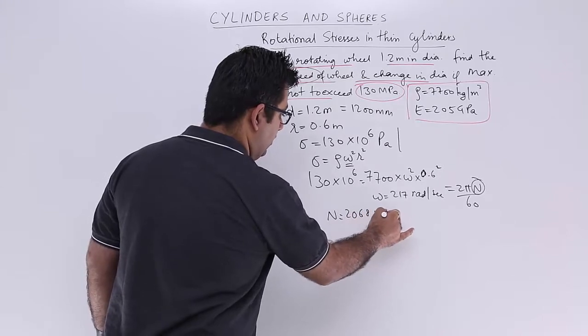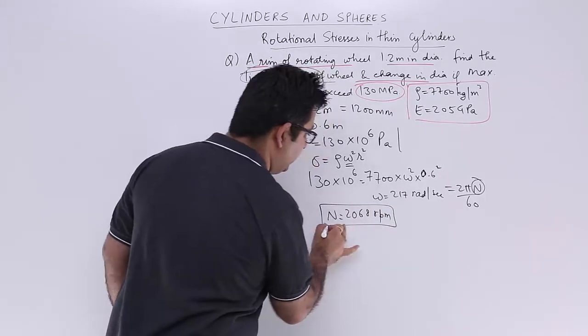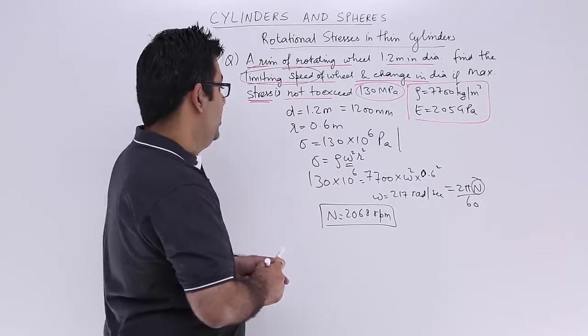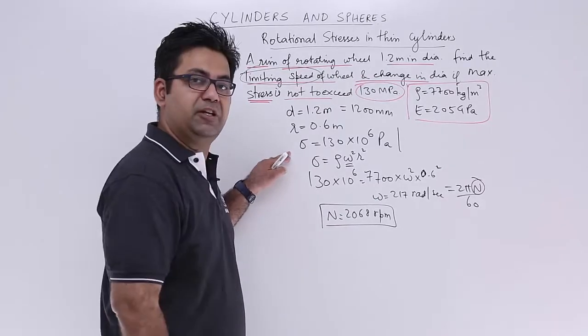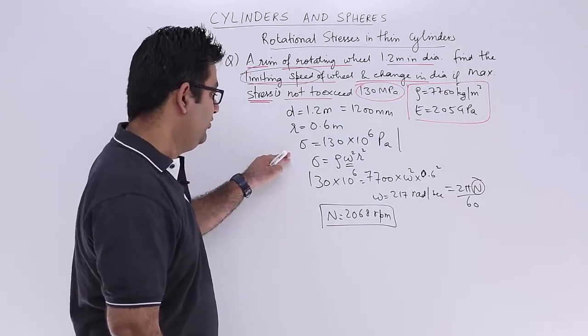2068 RPM. So your RPM is nearly touching 2100 to limit the stress to 130 MPa. We have completed the first part.